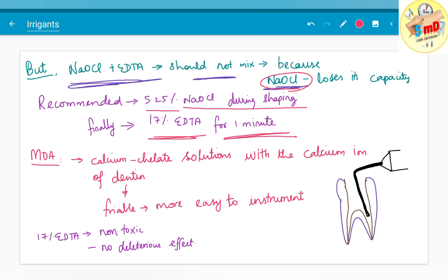The mechanism of action: it chelates the calcium ions. The chelate solutions with the calcium ion of dentin, and the dentin becomes friable in nature. It is more easy to instrument when it is friable.